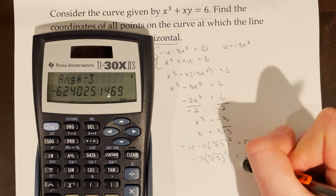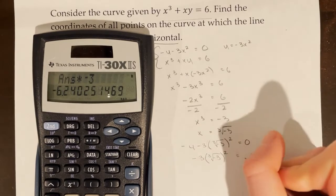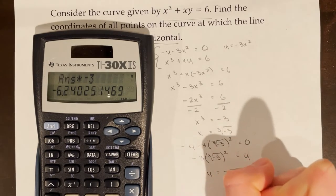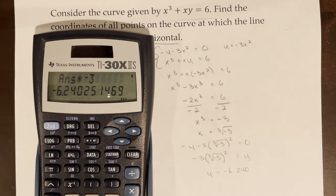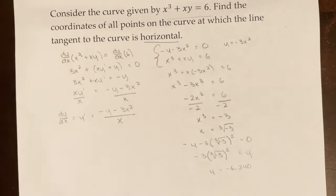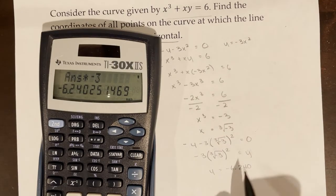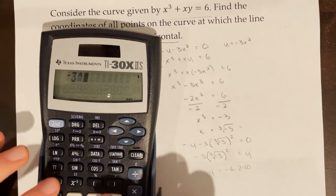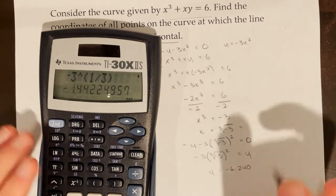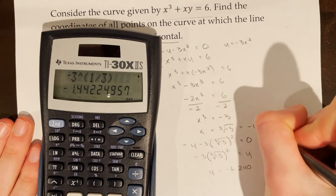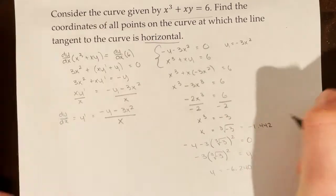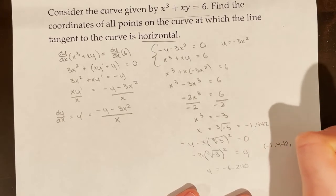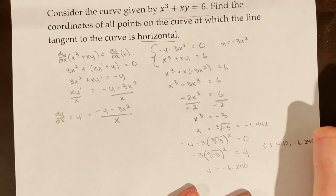This means y is equal to negative 6.240 (rounded to three decimal places). Since my y-coordinate is in decimal form, I'll also put my x-coordinate in decimal form: negative 3 to the power of 1/3 is negative 1.442. So my point is (-1.442, -6.240).